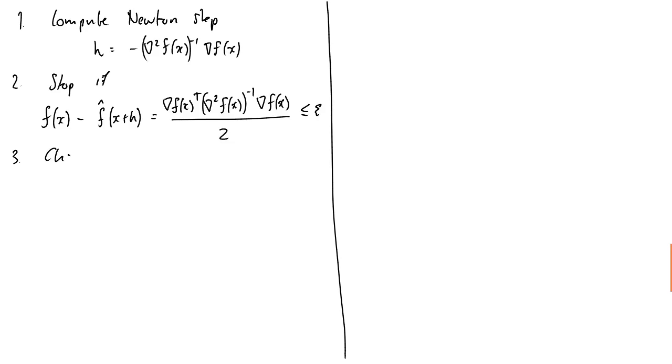Okay, step three. We choose a step size by backtracking line search. So I'll just explain that procedure in a moment. And then we update x to x plus t times h. And we do it again. Okay, so basically, run through this loop until we hit the exit condition.